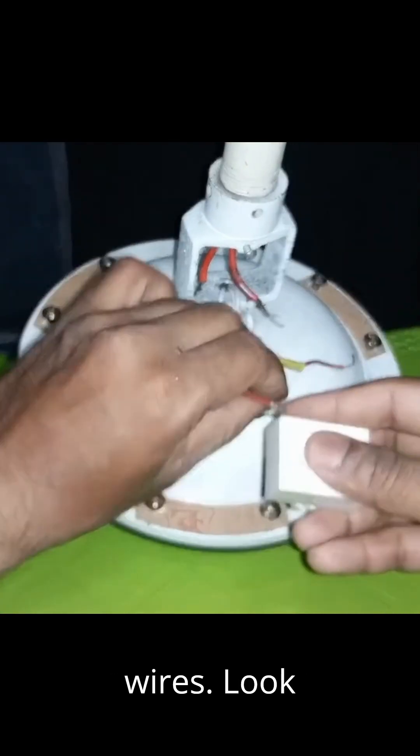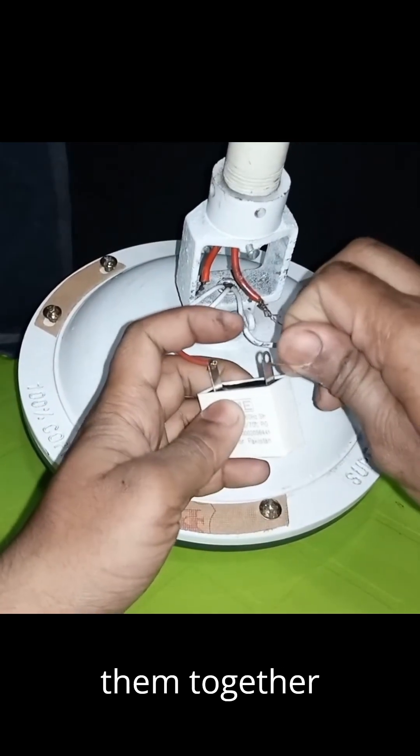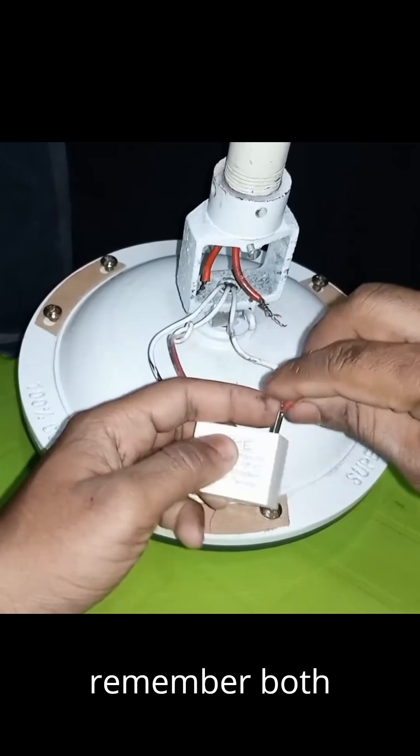We need to connect these wires. Look, both wires of the same color go into the capacitor, attach them. You can twist them together or connect separately, no issue. But remember, both wires of the same color.